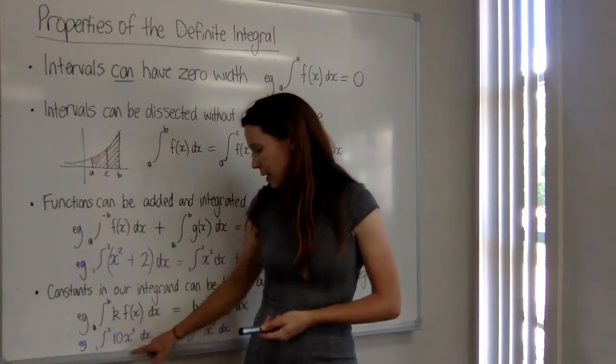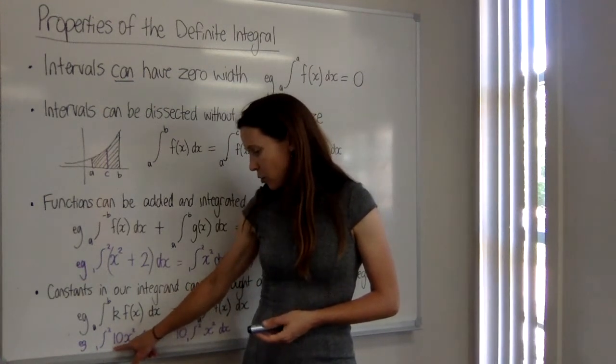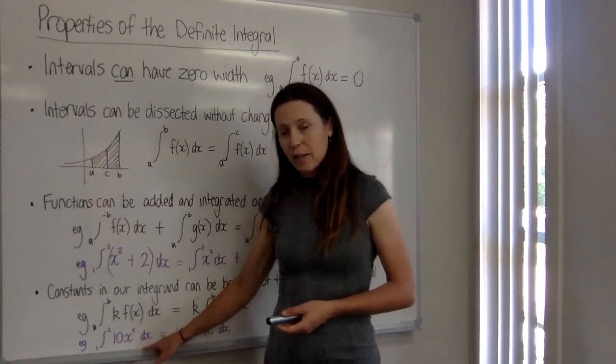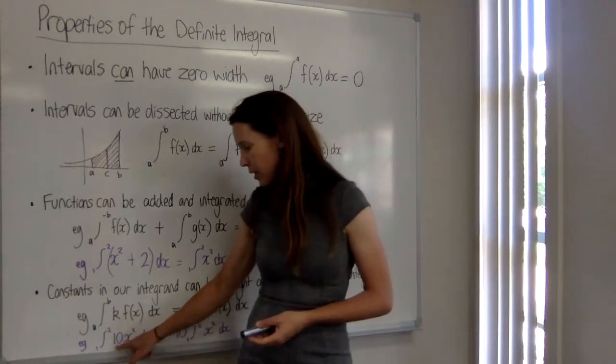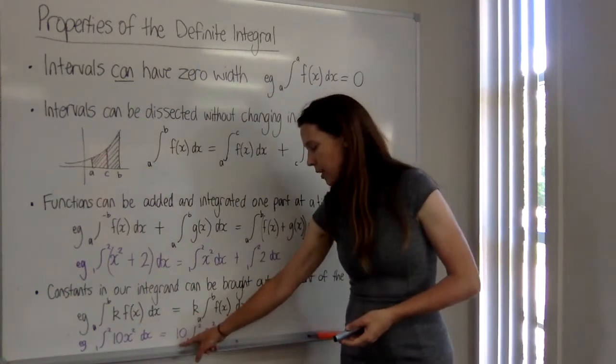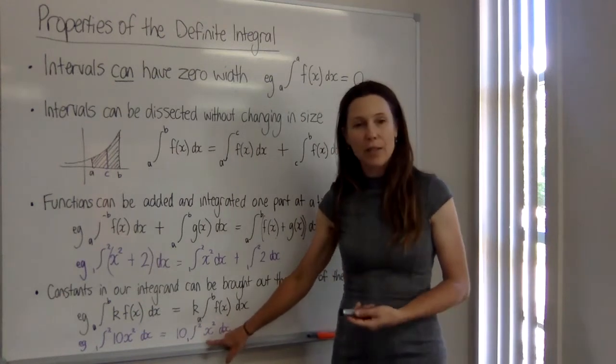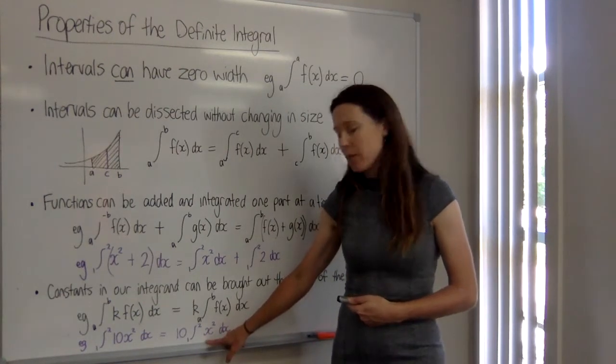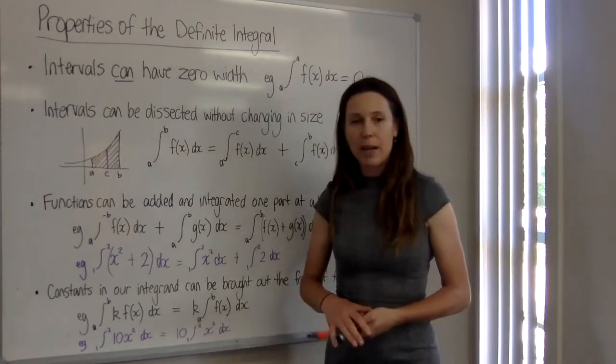So an example here, if we're trying to find this definite integral, we've got 10 x squared dx. To make our lives easier, we can bring the 10 out the front and then go ahead and find the definite integral just of x squared, which is going to be a bit simpler. And then at the end, multiply by our 10.